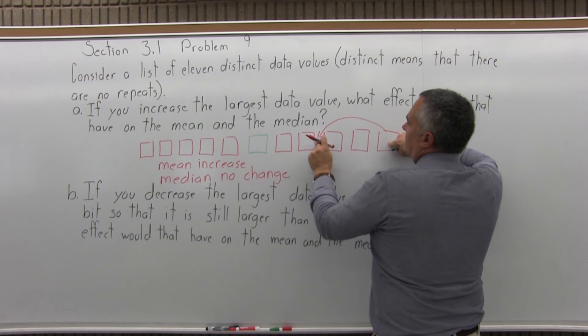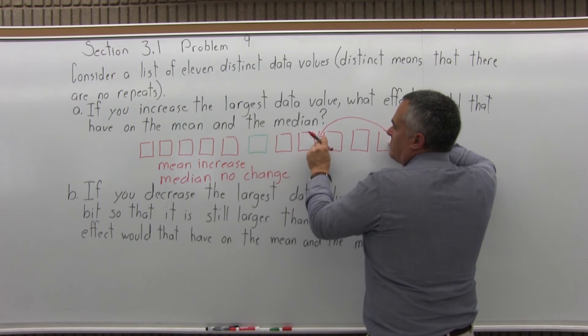Let's say it slides over here. Let's say it's an 88 and we put it down to a 72, which is still bigger than the median value.